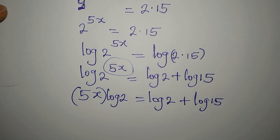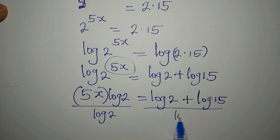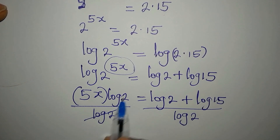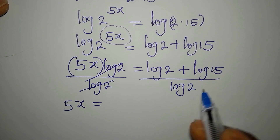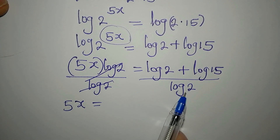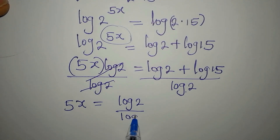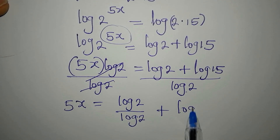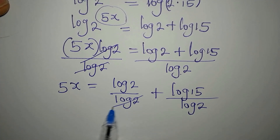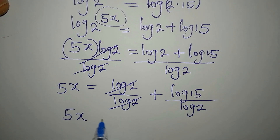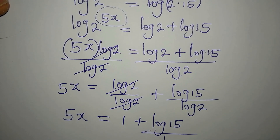We want only 5x on the left, so we divide both sides by log 2. This gives us 5x equals log 2 divided by log 2 plus log 15 divided by log 2. The log 2 divided by log 2 cancels, so 5x equals 1 plus log 15 divided by log 2.